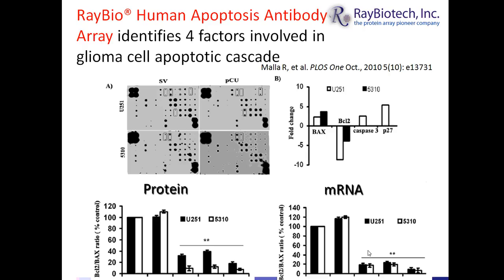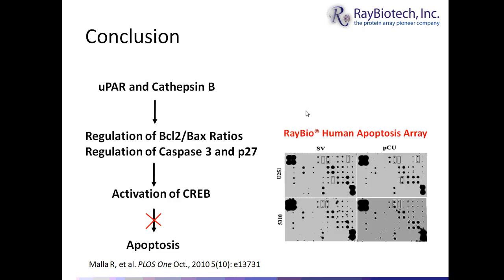The conclusion of this paper is that UPAR and cathepsin B directly regulate ratios of BCL-2 and Bax levels within cells, identified using the Ray Biotech Human Apoptosis C-Series Membrane-Based Array. Caspase-3 and P27 were also shown to be regulated by UPAR and cathepsin B. Regulation of these proteins controls CREB, and inhibition of CREB translocation into the nucleus results in inhibition of apoptosis in high-grade gliomas. Josti's group published this in a PLOS ONE paper.